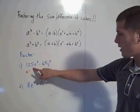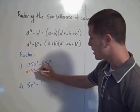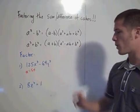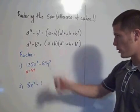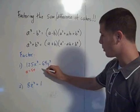So the quantity here being cubed is 5x, since 5 cubed is 125 and x cubed is x cubed.